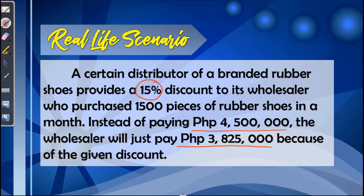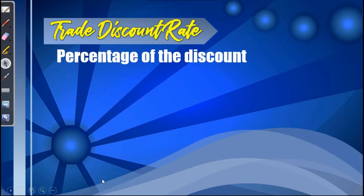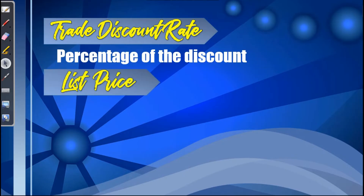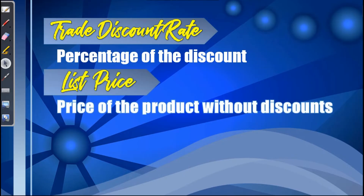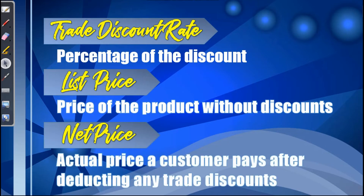Let us define each term. The trade discount rate refers to the percentage of the discount. List price refers to the price of the product without the discounts. And the net price is the actual price a customer pays after deducting any trade discounts.